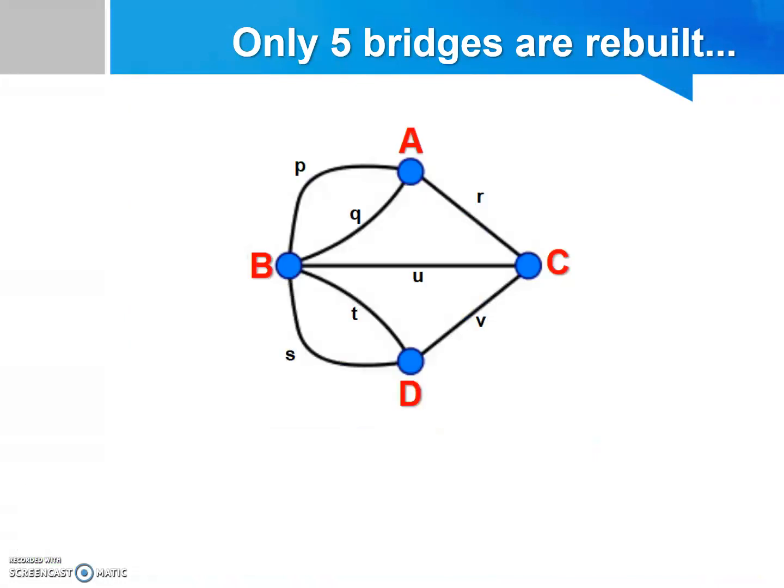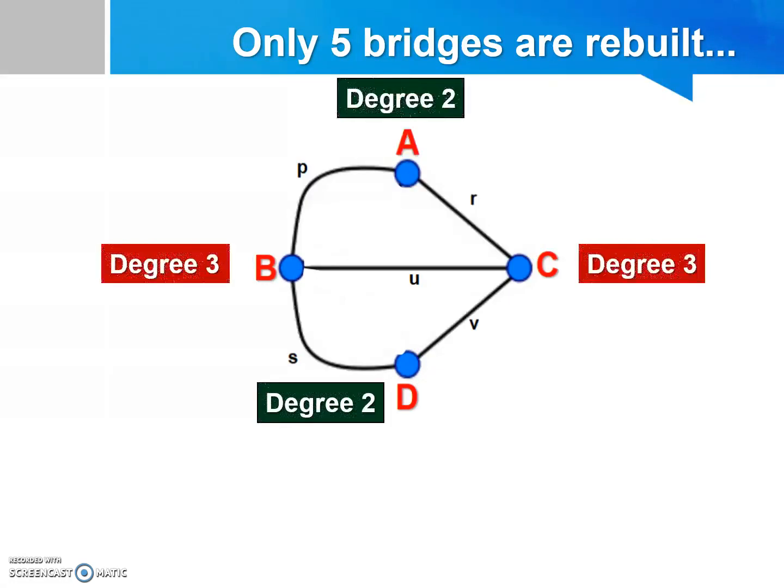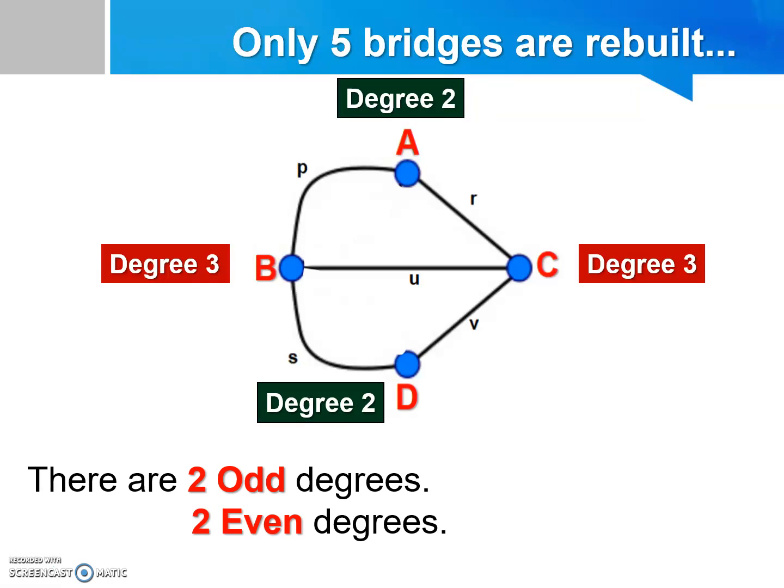Okay, let's prove it together. Since there are only 5 bridges rebuilt, we can draw the graph or the network like that. As we can see from the network, vertices A and D have degree of 2, and they are even degrees. While for vertices B and C, they have degree of 3, and they are odd degrees. So all together, we have 2 odd degrees and 2 even degrees.